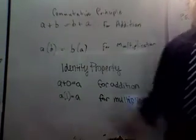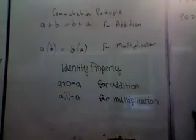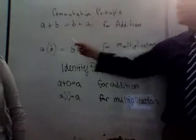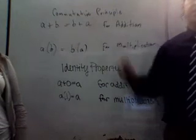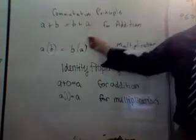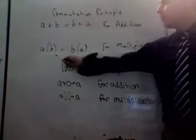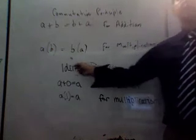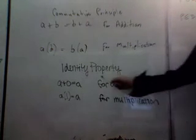Alright, so some principles in 1-2. This is page 9 and 10. The commutative principle over addition says that A plus B is equal to B plus A. In other words, we can switch the position of A and B, and it'll be the same answer. Same thing for multiplication, except now the operation is multiplying. A times B equals B times A.